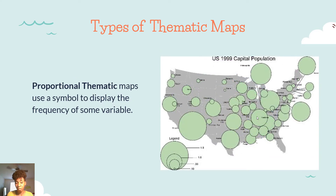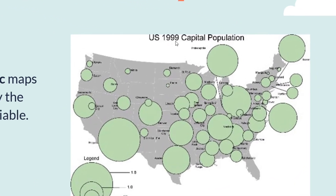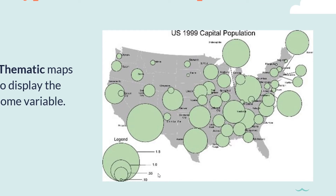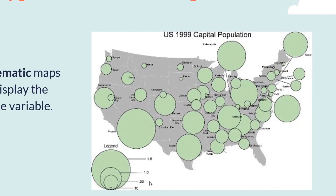Proportional thematic maps use symbols to display frequency of a variable. In this case, this is showing 1999 capital population. If you look at the legend, the smaller the dot, the less frequent it is; the larger the dot, the more frequent it is. So looking at the map, you can see that places like New Jersey and New York have large dots, meaning the frequency of the population must be very large, whereas certain areas like the Dakotas have small dots.